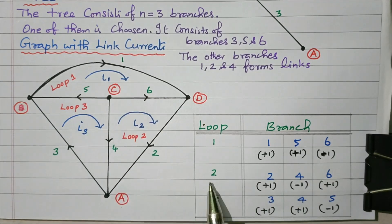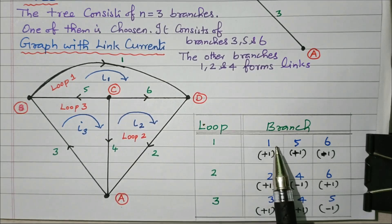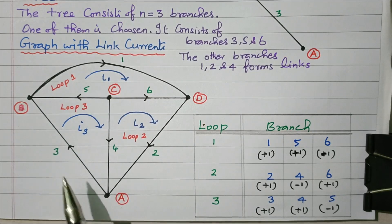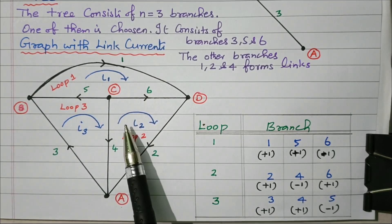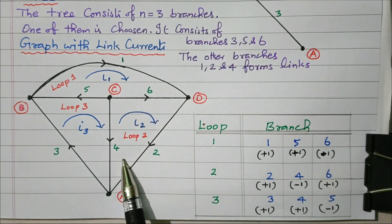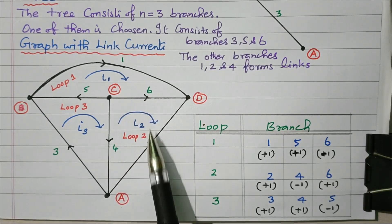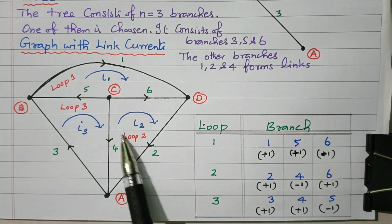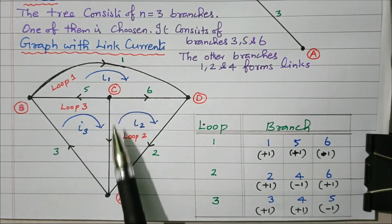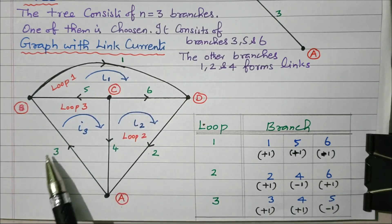For loop two, containing branches two, four and six: the loop current flows clockwise. Branches two and six are in the same direction, so they are plus one. Branch four is in the opposite direction — the loop current goes up while branch four comes down — so branch four is minus one. The remaining branches one, three and five are zero for loop two.